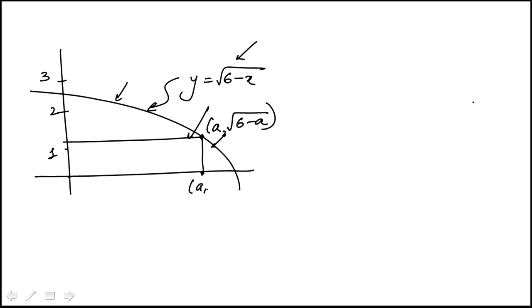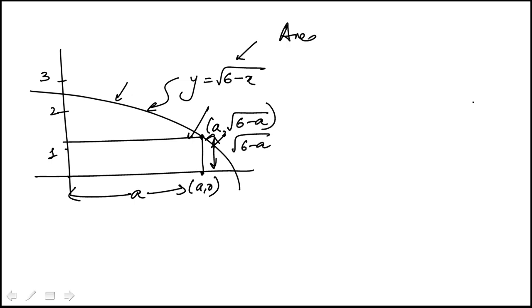That point is (A, 0). So this is a rectangle — that dimension is A, and this is square root of 6 minus A. So the area is A times square root of 6 minus A. That's the function we're trying to maximize.